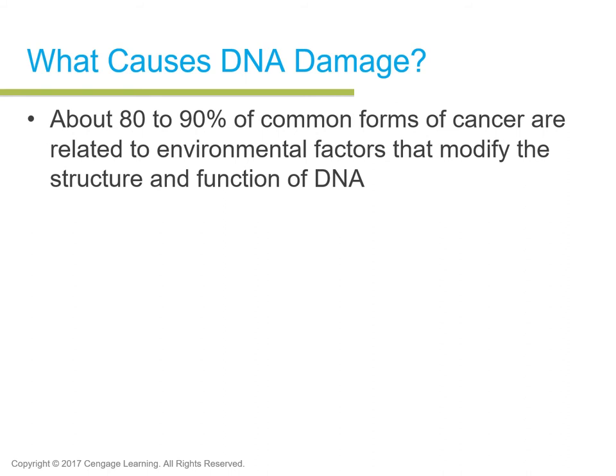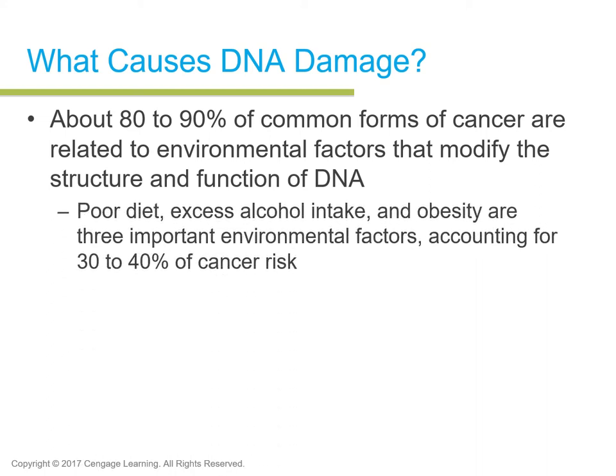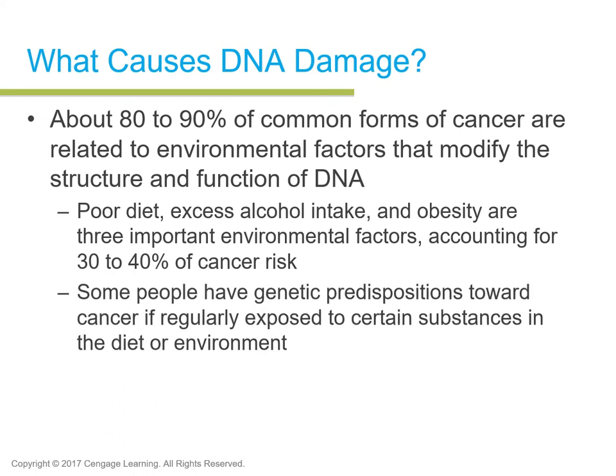About 80 to 90% of common forms of cancer are related to environmental factors that modify the structure and function of DNA. Poor diet, excess alcohol, and obesity account for 30 to 40% of cancer risk. Some people have genetic predispositions toward cancer if regularly exposed to certain substances in the diet or environment — for instance, even secondhand smoke from living with someone who smokes predisposes you to that risk.